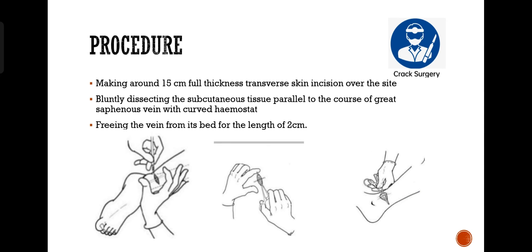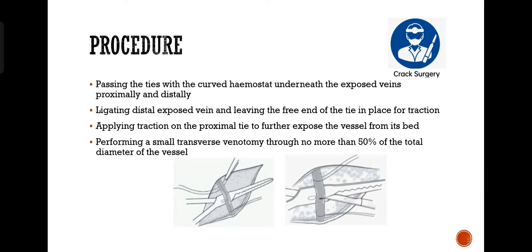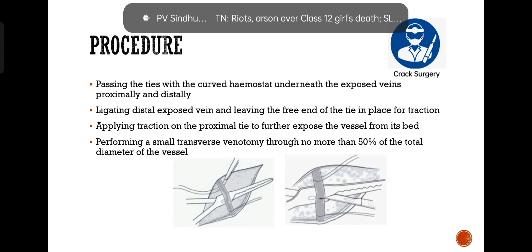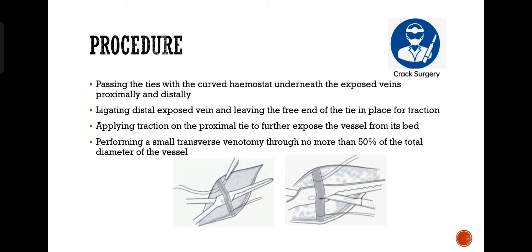Make a half-centimeter full-thickness transverse skin incision over the site. Bluntly dissect the subcutaneous tissue parallel to the course of the great saphenous vein with a curved hemostat, freeing the vein from its bed for a length of 2 cm. Pass ties with curved hemostat underneath the exposed vein proximally and distally. Ligate the distal exposed vein, leaving the free end of its tie in place for traction. Apply traction on the proximal tie to further expose the vessel, then perform a small transverse venotomy through no more than 50% of the total diameter of the vessel.